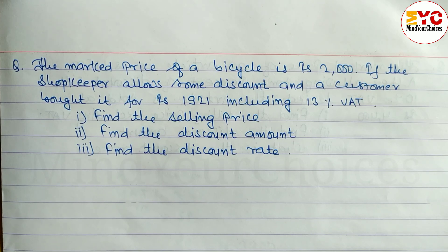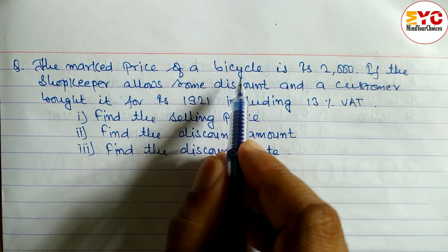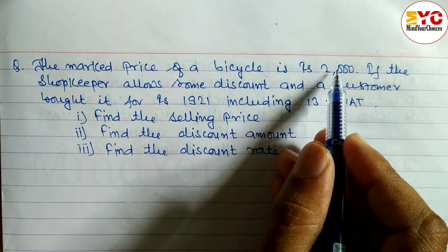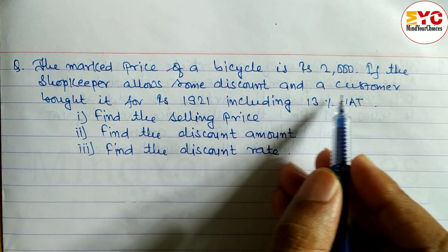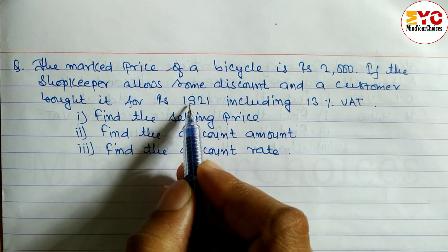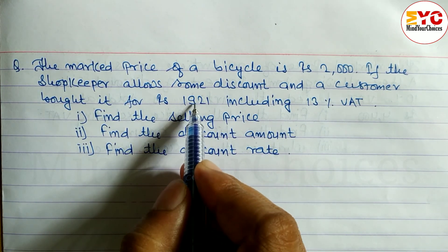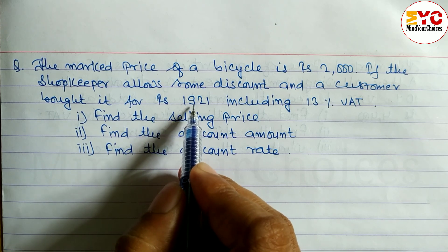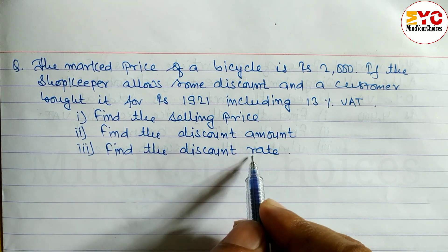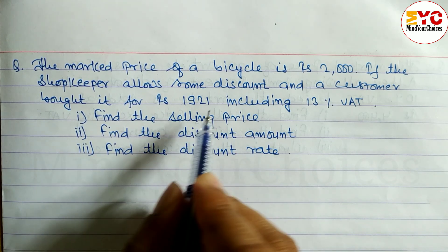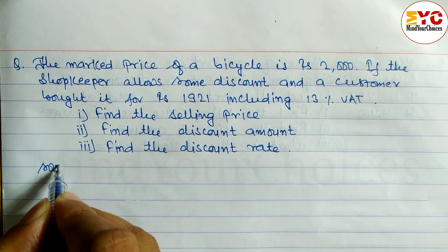Class 9 Value Added Tax question. The mark price of a bicycle is Rs. 2000, so MP = 2000. The shopkeeper allows some discount and a customer bought it for Rs. 1921 including 13% VAT. Including 13% VAT means this is SP with VAT. We need to find the selling price, the discount amount, and the discount rate.